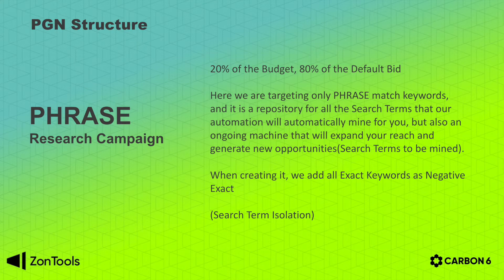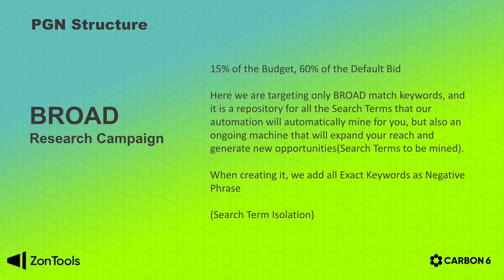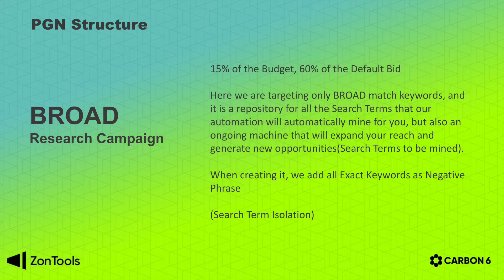You want to isolate the exact, phrase, and broad not to bid for the same search term in more than one location and more than one campaign. The next entity is the broad campaign, which is also a research campaign, where we will allocate 15% of the daily budget and 60% of the default bid. This is exactly like the phrase match, wherein we will add any customer search term that we mine for you or keywords that you may add as broad match, in order to identify new opportunities to expand your reach to new longer tail search terms. Here we will also leverage search term isolation, so we will negate all the keywords that you add as phrase matches away from the broad on the PGN.